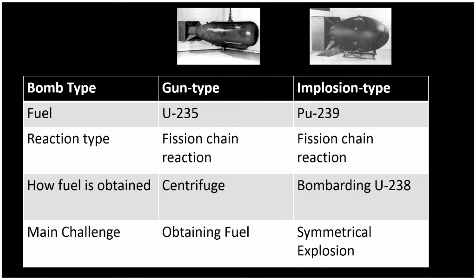To summarize: the gun-type bomb uses uranium-235 in a fission chain reaction, with fuel obtained by centrifuge — the main challenge being acquiring that highly enriched uranium. The implosion-type device uses plutonium-239, also in a fission chain reaction. The fuel is relatively easy to obtain by bombarding uranium-238 with neutrons, but the main challenge is achieving that perfectly symmetrical explosion around the plutonium core.